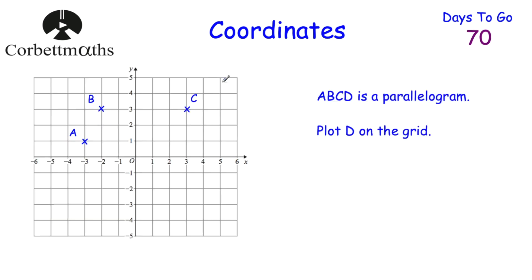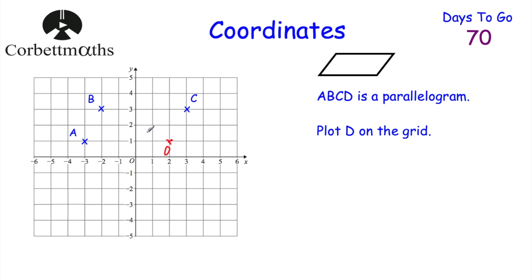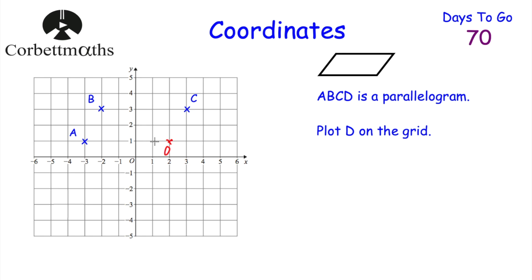Now let's have a look at a question involving shapes on a grid. We've got points A, B, and C, and we're told that ABCD is a parallelogram and we're asked to plot D on the grid. A parallelogram is like a pushed-over rectangle. To get from A to B, we go one across and two up, so to get from D to C we'd also go one across and two up. That means point D would be at two, one — giving us our parallelogram.